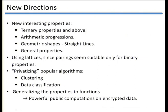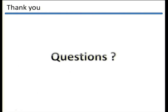I will conclude with new directions for property-preserving encryption, which are numerous. There are many interesting properties like ternary properties, arithmetic progressions, or geometric shapes, and we suggest using lattices since pairings seem suitable only for binary properties. There are many applications such as privatizing popular algorithms like clustering or data classification. A final direction is to generalize properties to functions that output a specific value rather than just 0 or 1, enabling powerful public computations on encrypted data.